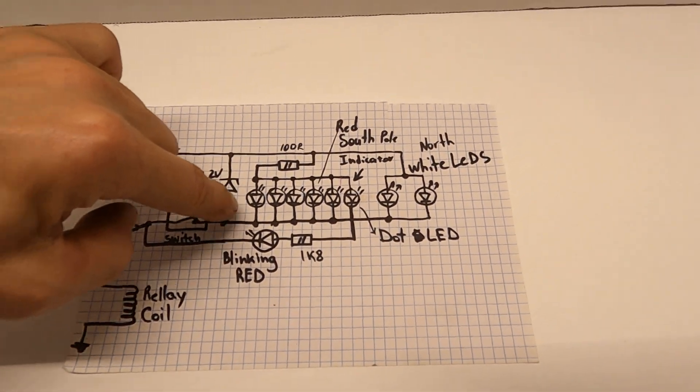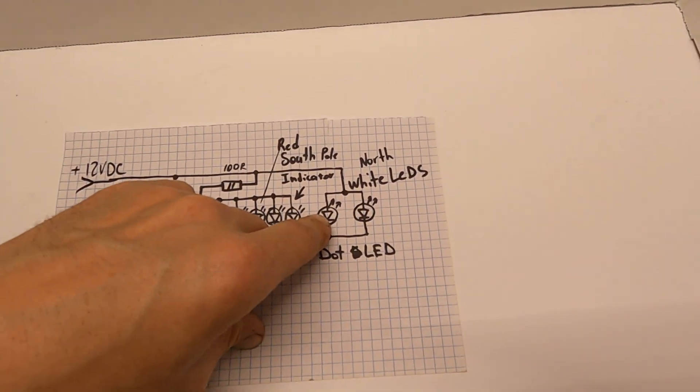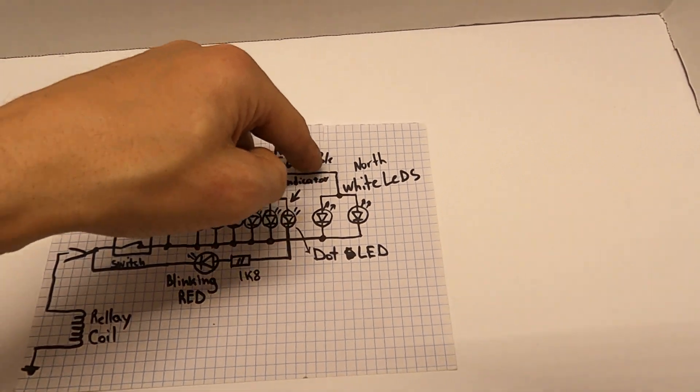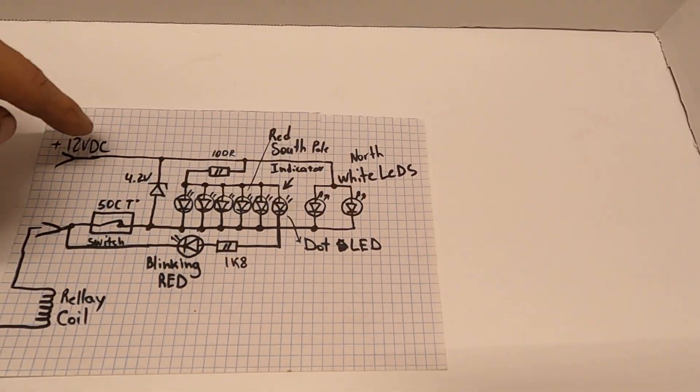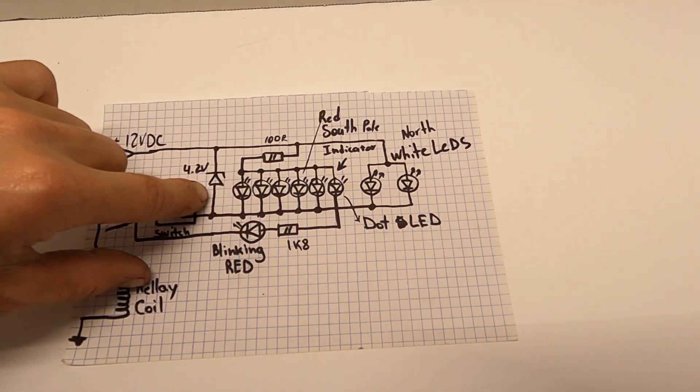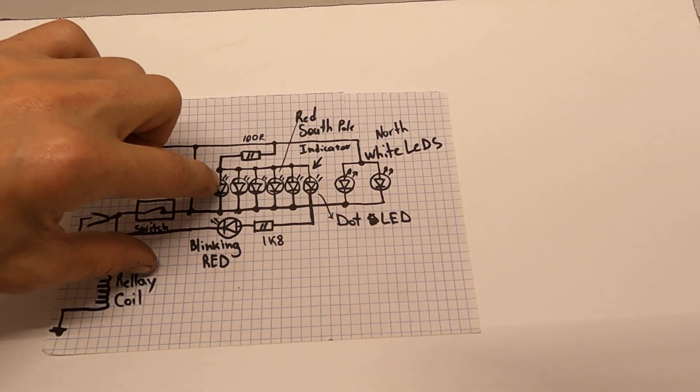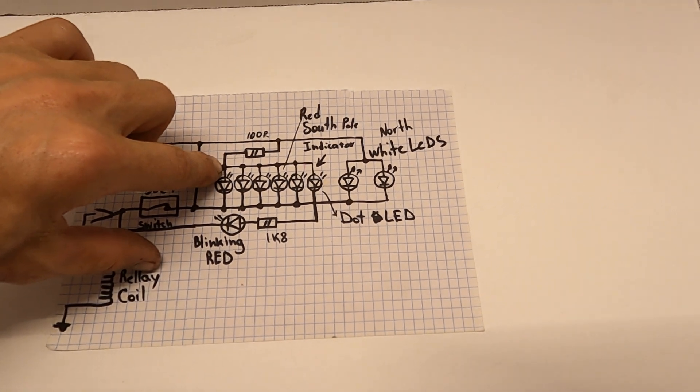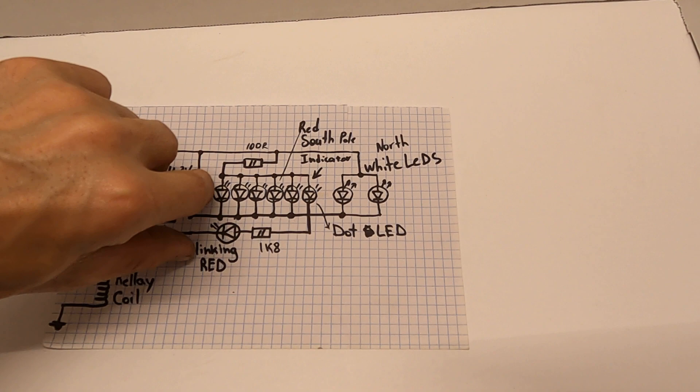This Zener is here to bypass in case these LEDs burn out. The current will be able to bypass the LEDs. Also if white LEDs burn out, because current is flowing through them as well, if they burn out the current will be able to bypass via the 4.2 volt Zener here. Also, in case they short, which usually doesn't happen, but diodes do short, so in case they short and stop producing light.